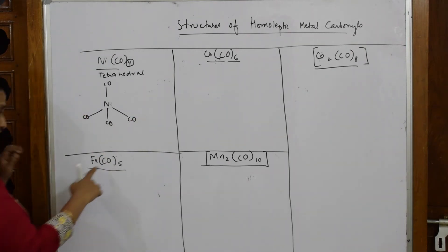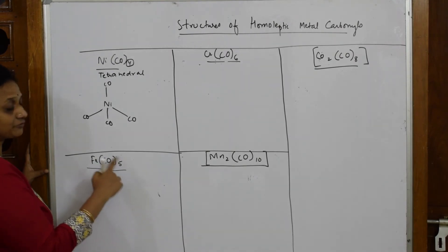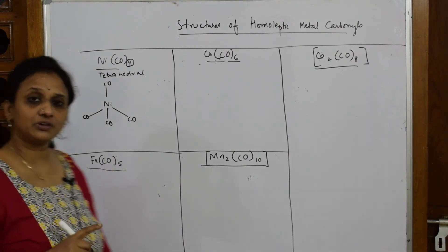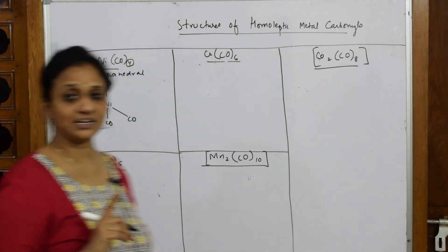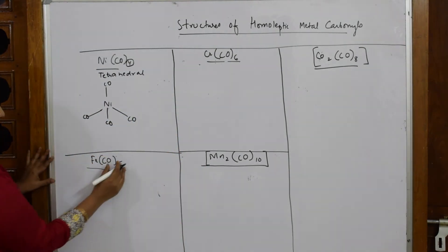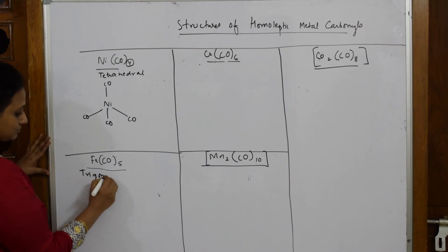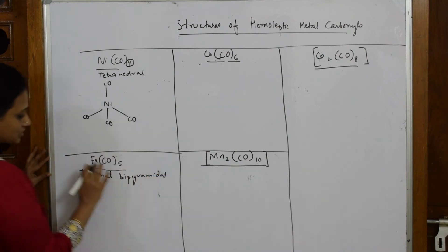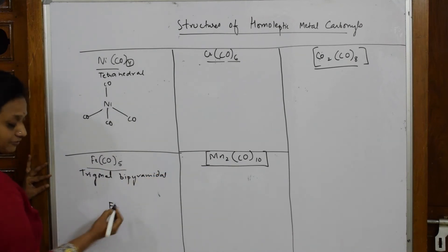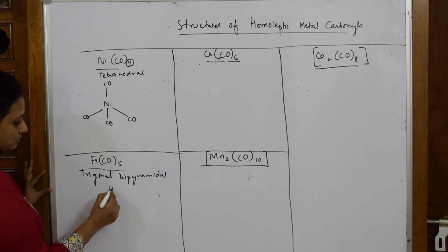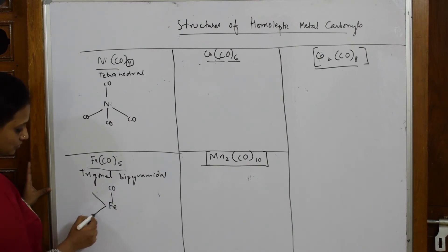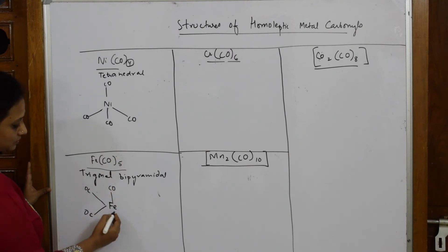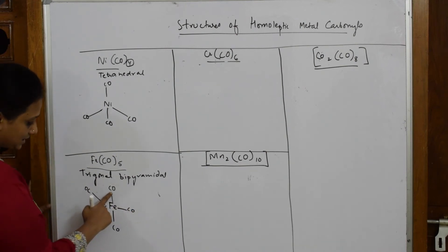For Fe(CO)₅ — iron pentacarbonyl — the coordination number is five. When it is five, we call it trigonal bipyramidal; you studied these structures in grade 11. Draw the metal atom Fe in the center, one above, one below, and three around it in a trigonal bipyramidal shape — exactly a T shape.